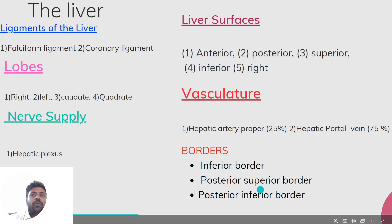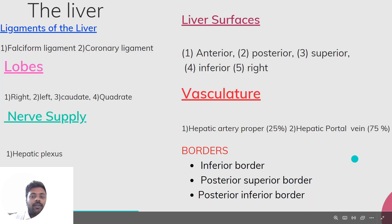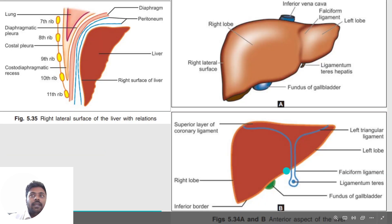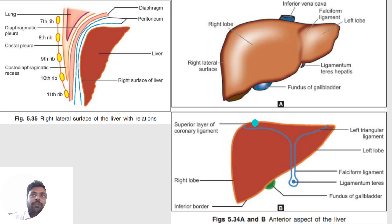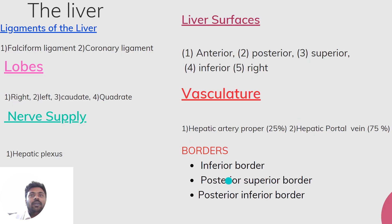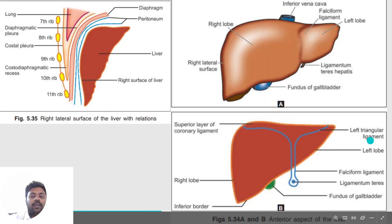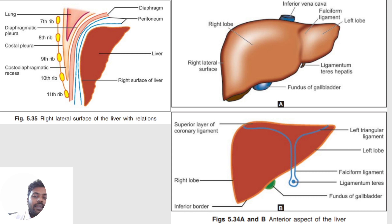Next we have the posterior superior border, which lies between the posterior and superior surfaces. The third border is the posterior inferior border, which is formed from the inferior layer of the coronary ligament and the inferior border of the caudate lobe.